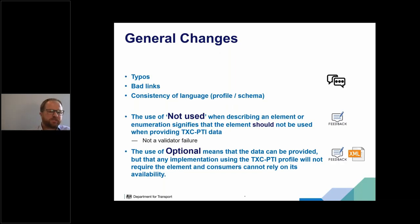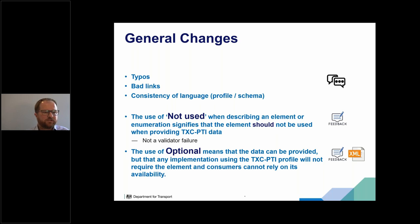General changes — this is tidying up language, bad links, and things like that. There are some bad links and typos that were spotted post consultation. One of the key things changed in the A release is that previously many data elements had said 'not used,' implying they should not be used. But we've changed most of those to 'optional,' because if somebody has that data and can supply it, it's going to be useful for potential downstream users.